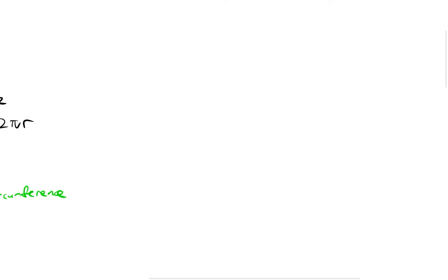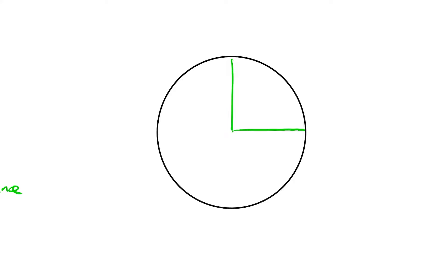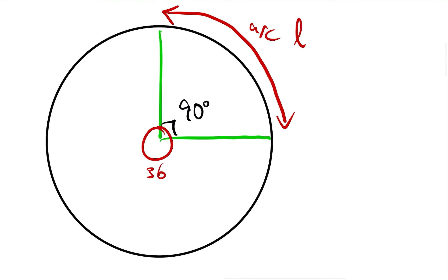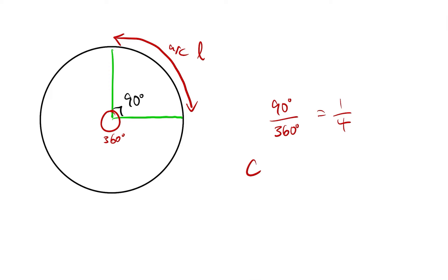Let's try another one — let's do a quarter circle. So let's say I have a quarter with an angle of 90 degrees, and I want to find the arc length. Same logic as before: the full circle has 360 degrees and we're only finding the arc length of the 90-degree portion. So 90 over 360, which simplifies to 1 over 4, or one quarter. The circumference is 2πr, so one quarter times 2πr gives us one half times πr.